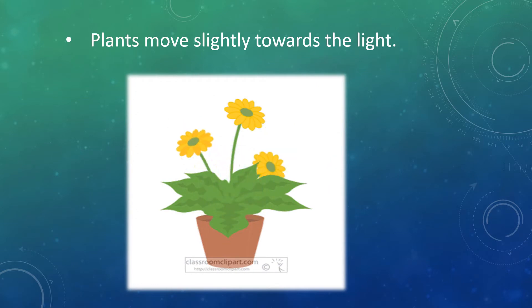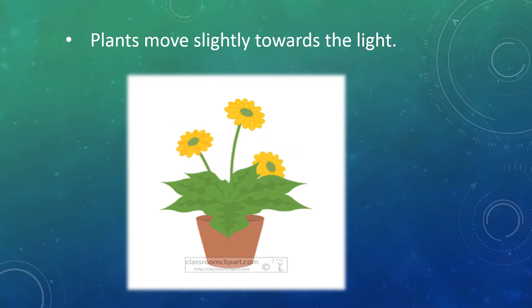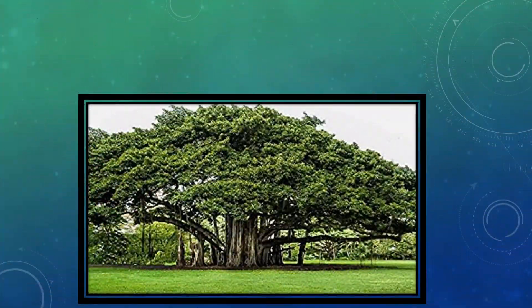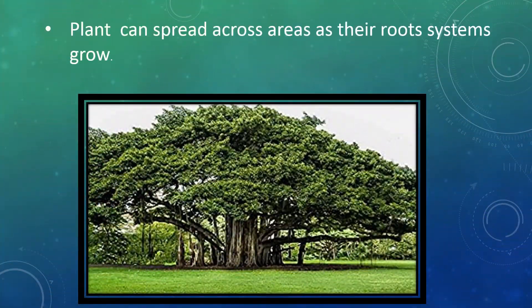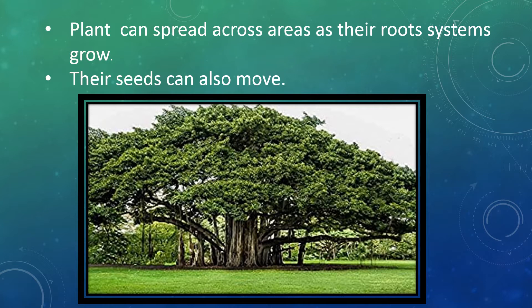The plants move slightly towards the sunlight. A plant can also spread across areas as their root system grows, and their seeds can also move.